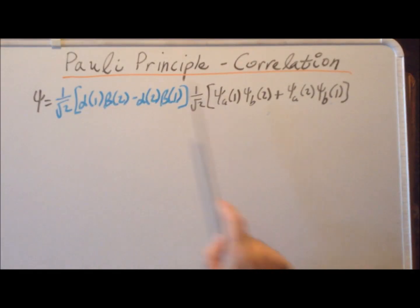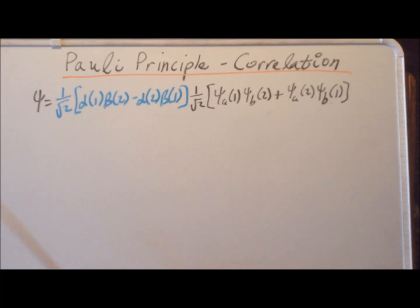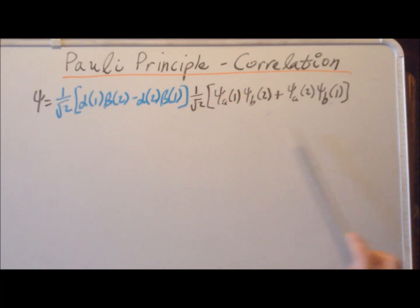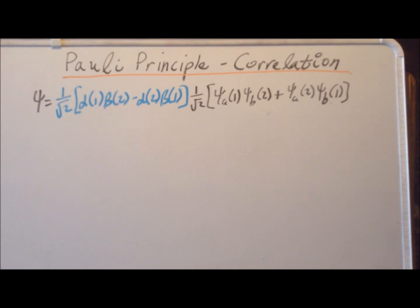Here we have, in full detail, the overall proper wave function for two electrons in a singlet state with opposite spins. In blue is our antisymmetric spin part, and in black is our symmetric spatial part. We are going to write this particular expression in the form of a determinant, so now we have the overall wave function written as a determinant times an expression.